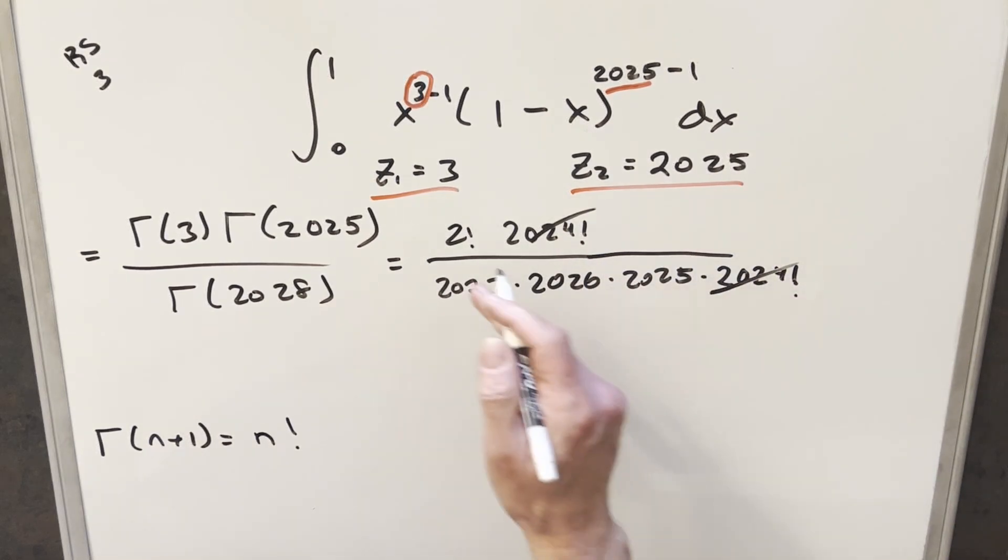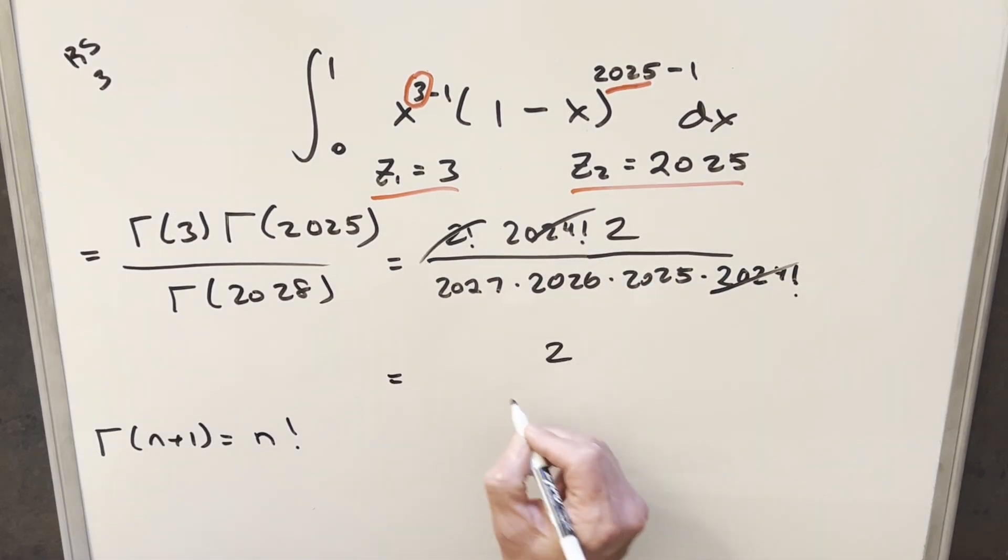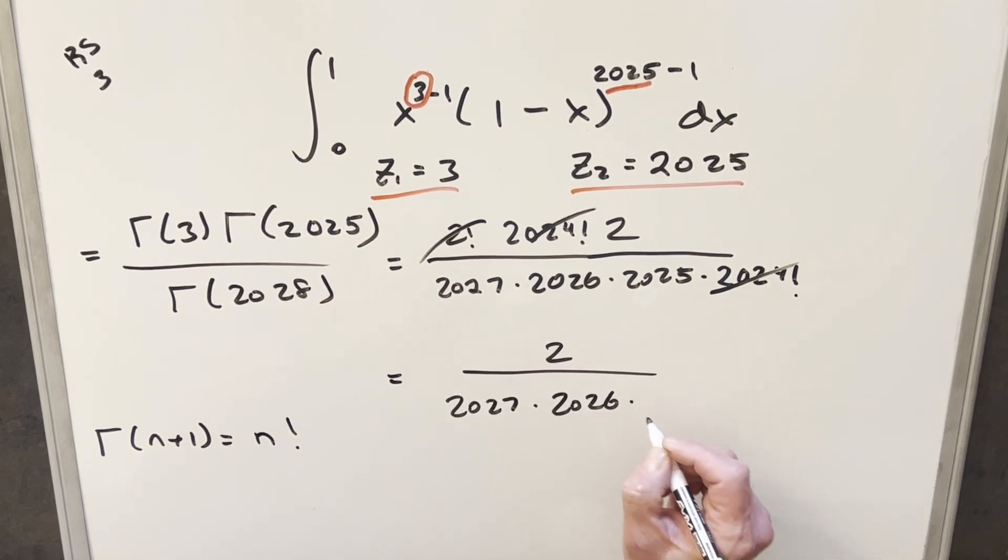And then let's just extend this. But now for two factorial, two factorial is just two. So let me just write a two here in the numerator. And so for my final solution for this, we just get two over 2027 times 2026 times 2025.